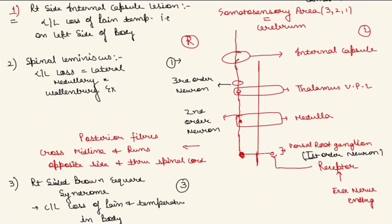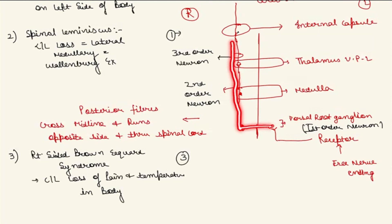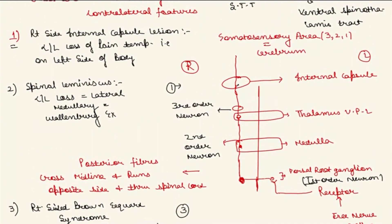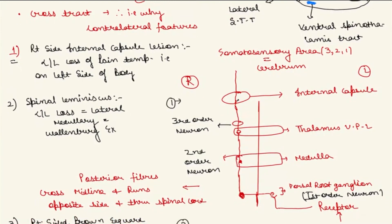In the spinothalamic tract, the fibers cross in the spinal cord itself — unlike the dorsal column medial lemniscus system, where decussation occurs in the medulla. So, once the first order neuron enters the dorsal root ganglion, the fibers cross immediately and travel contralaterally. With a right-sided internal capsule lesion, the patient would have contralateral loss of pain and temperature on the left side, because the fibers have already crossed in the spinal cord.